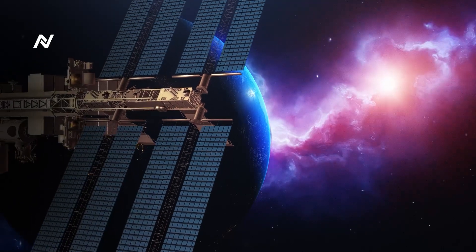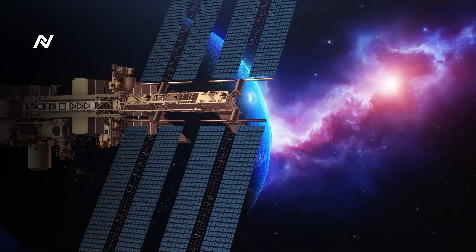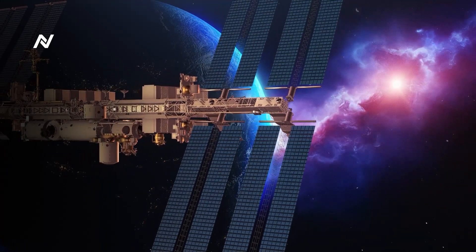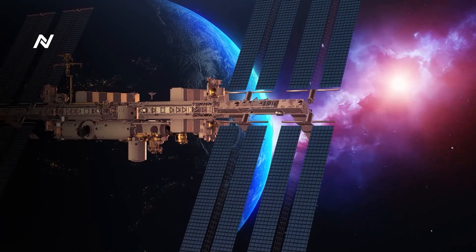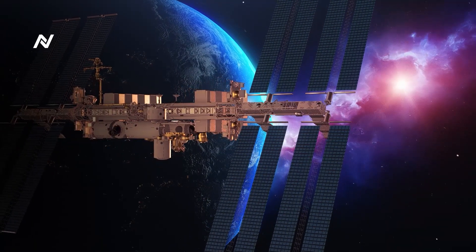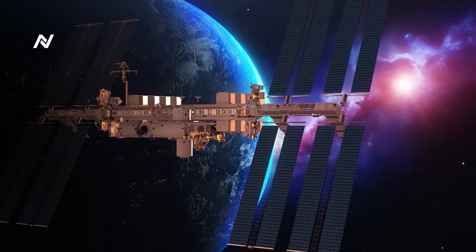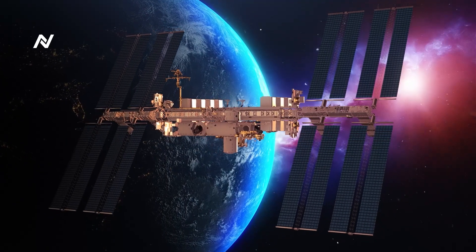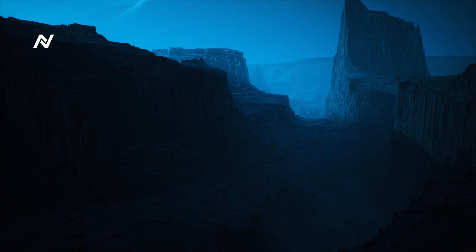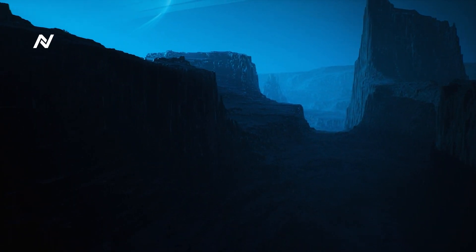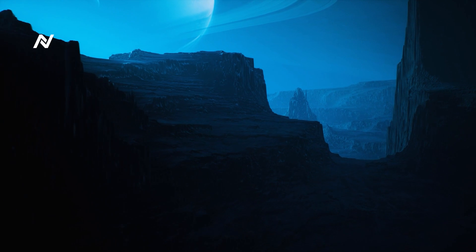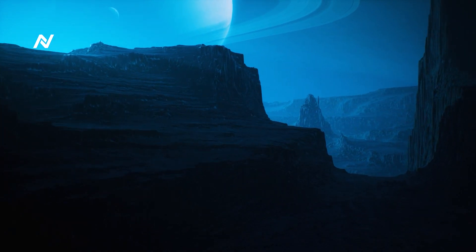A Planet with Eternal Daylight. Imagine living on a planet where the sun never sets. In 2024, astronomers discovered such a planet, TRAPPIST-4G, located in the famous TRAPPIST system, known for its potentially habitable worlds. But unlike its siblings, TRAPPIST-4G is tidally locked, meaning one side of the planet always faces its star, while the other remains in perpetual darkness.